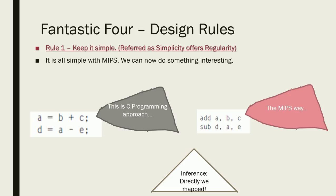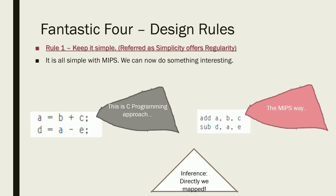Now we get into the design rules. The first design rule is: simplicity offers regularity. Whenever you write C, Java, or any high-level program, it should be simple to translate to MIPS instructions. For example, 'a = b + c' becomes 'add a, b, c' — simple. 'd = a - e' becomes 'sub d, a, e'. It's a very simple design with direct mapping from high-level programming to MIPS, and this offers regularity.